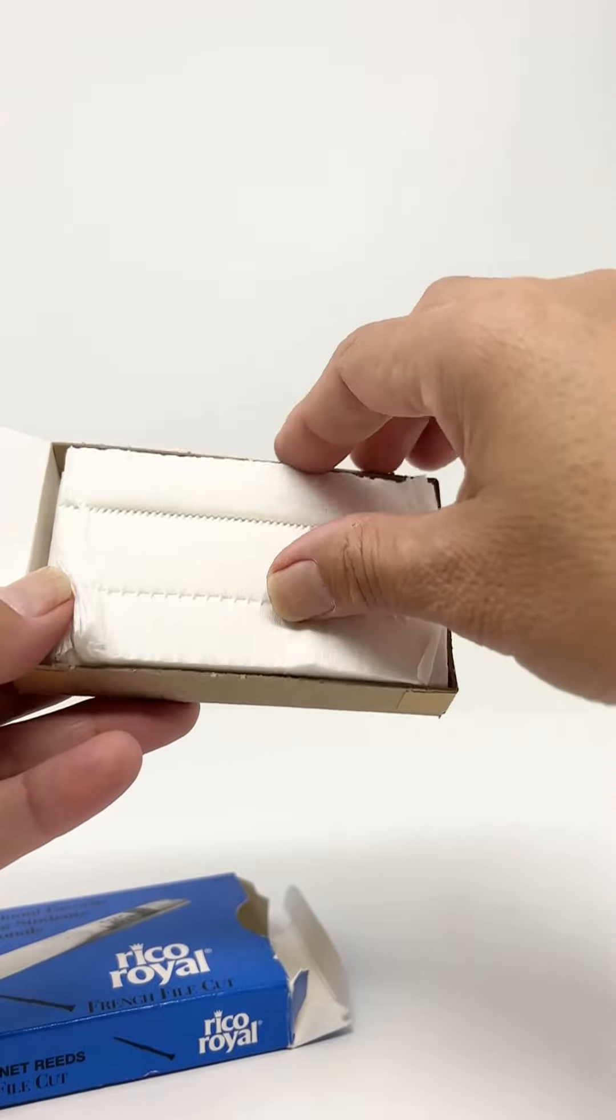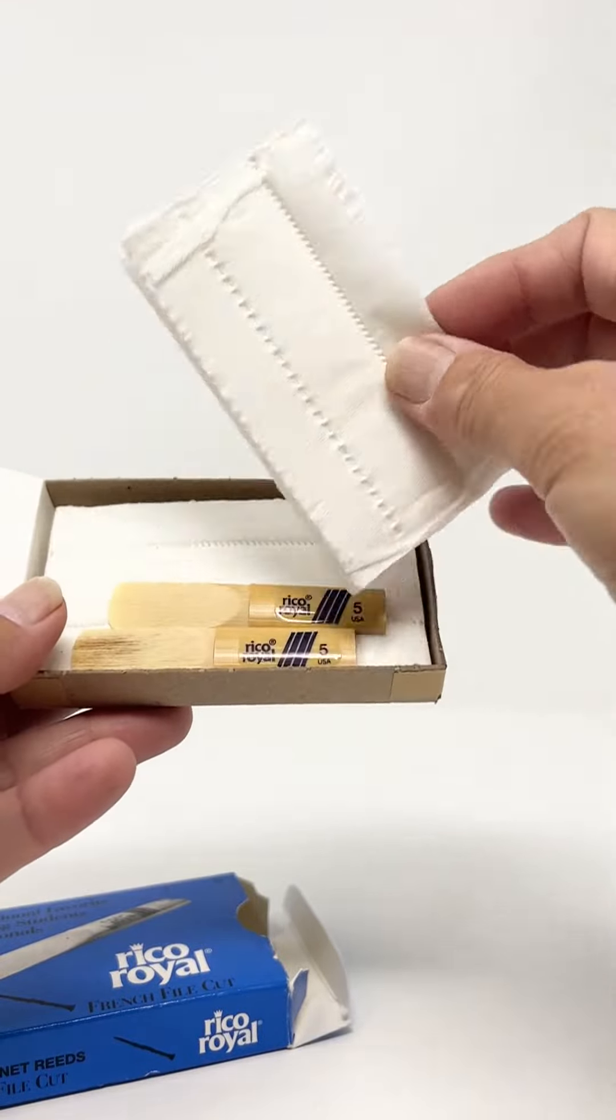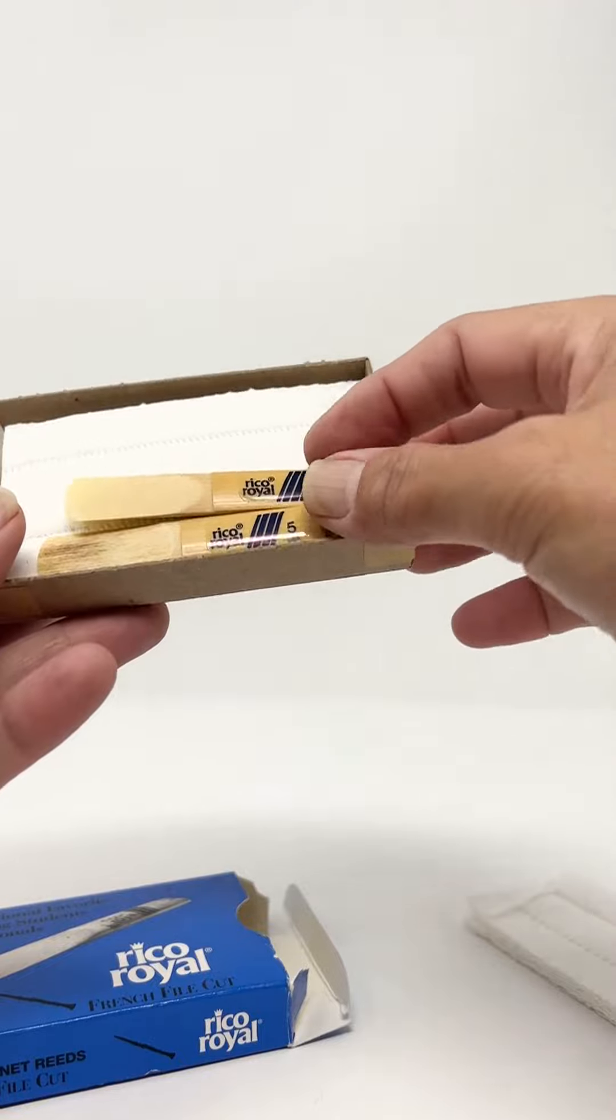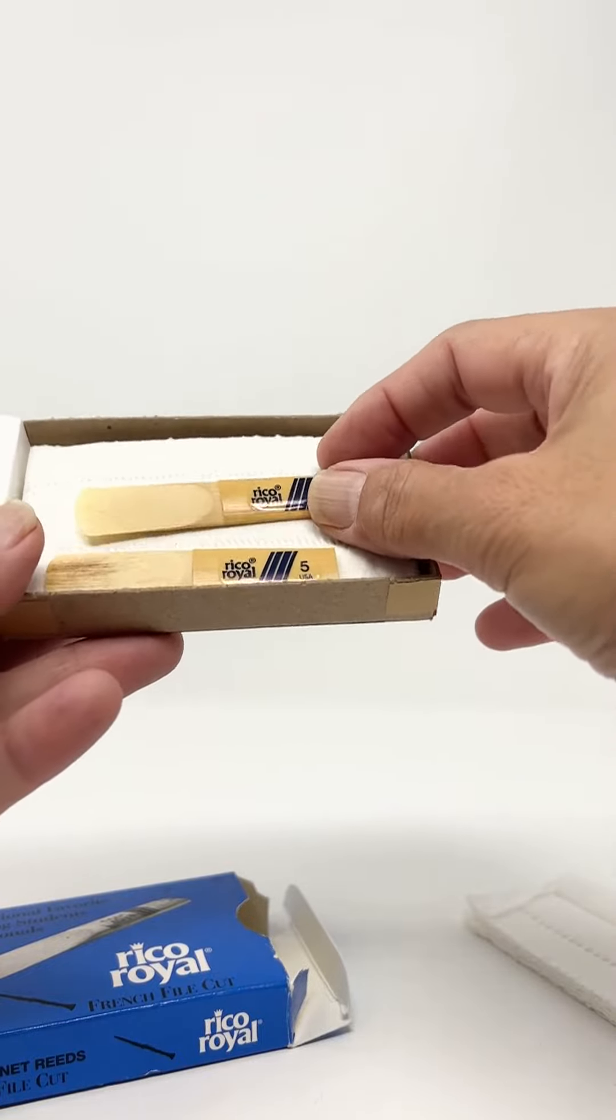They'd have this little cotton weird thing here, and then they'd have the reeds laid out like so, and that's how they did it.